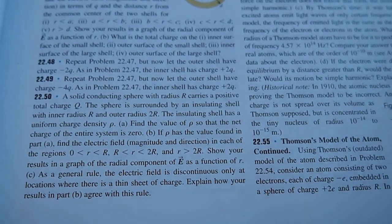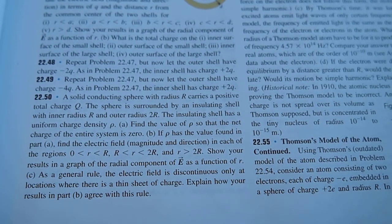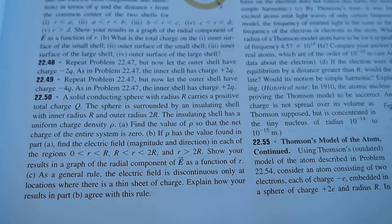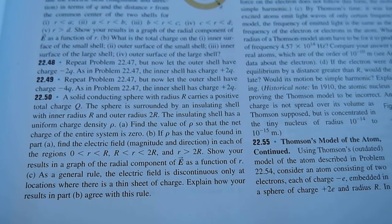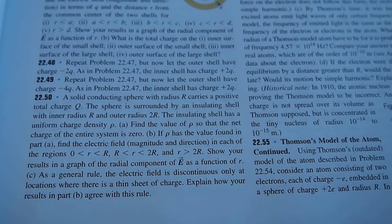Alright, so we'll be doing problem 2250. A solid conducting sphere with radius R carries a positive total charge Q. The sphere is surrounded by an insulating shell with inner radius R and outer radius 2R. The insulating shell has a uniform charge density rho. Find the value of rho so that the net charge of the entire system is zero.